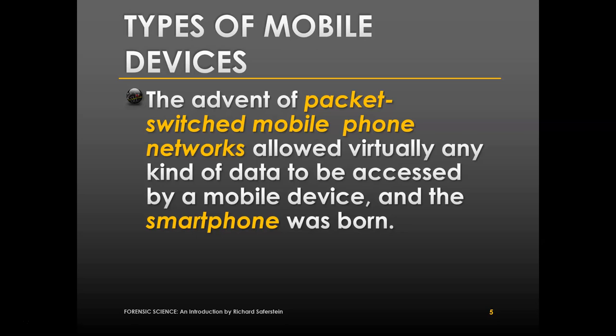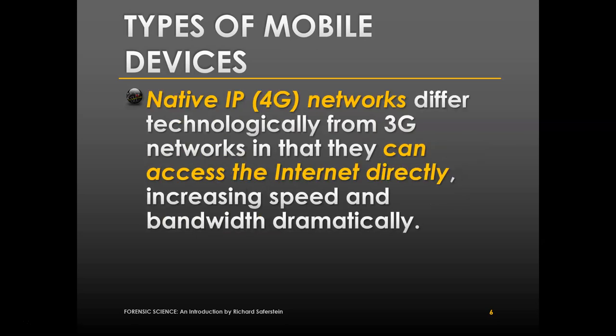Before 3G, phones were still technically kind of smartphones, but not true smartphones. Which brings us to what most of us are on right now: native IP, also known as 4G networks. These differ technologically from 3G networks in that they can access the internet directly, which increases speed and bandwidth dramatically.